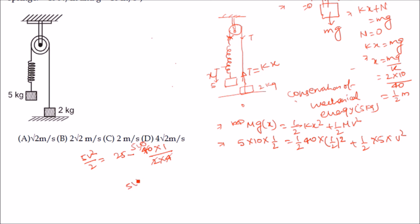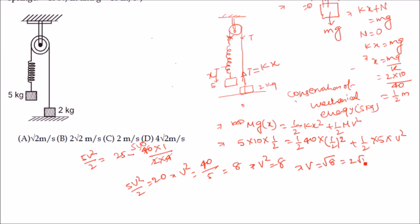Solving: 5v²/2 = 25 − 40 × (1/4)/2, which gives 5v²/2 = 25 − 5 = 20. Therefore v² = 40/5 = 8, so v = √8 = 2√2 m/s. The answer is 2√2 m/s, option B. For this type of problem, apply conservation of mechanical energy along with the force equation to solve it.